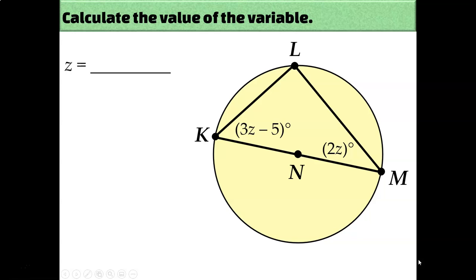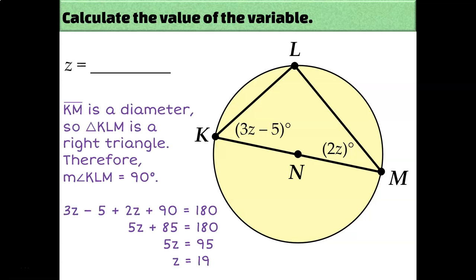We can do something similar to find the acute angle measurements. Here I have triangle KLM inscribed in circle N, and one of the three sides is a diameter — guaranteeing a right triangle, which means the other two angles are the two acute angles. According to the corollary to the triangle sum theorem, those two angles add up to 90. Or you can add all three angles together: 3z minus 5 plus 2z plus 90, set equal to 180 degrees. Either way, you find that z must be 19.